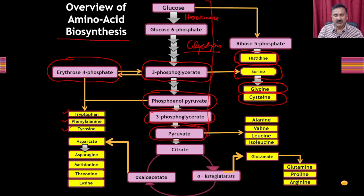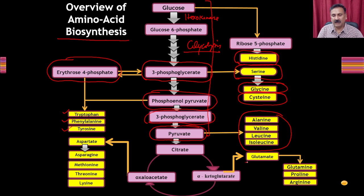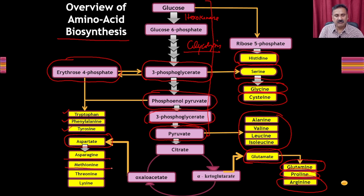Phosphoenolpyruvate is converted into pyruvate, which enters the TCA cycle forming citrate. Pyruvate is a precursor for amino acids like alanine, valine, leucine, and isoleucine. From the citric acid cycle, alpha-ketoglutarate provides the precursor for glutamate, from which glutamine, proline, and arginine can be synthesized. Oxaloacetate is a precursor for aspartate, from which arginine, asparagine, methionine, threonine, and lysine can be derived. This shows the importance of carbohydrate metabolism in providing precursors for amino acid synthesis — almost all intermediates are involved.